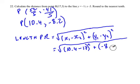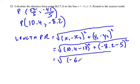Wait, plus negative 8.2 minus 5, and that will all be squared. So then this equals the square root of: 10.4 minus 17 equals negative 6.6, squared, plus negative 13.2 squared.